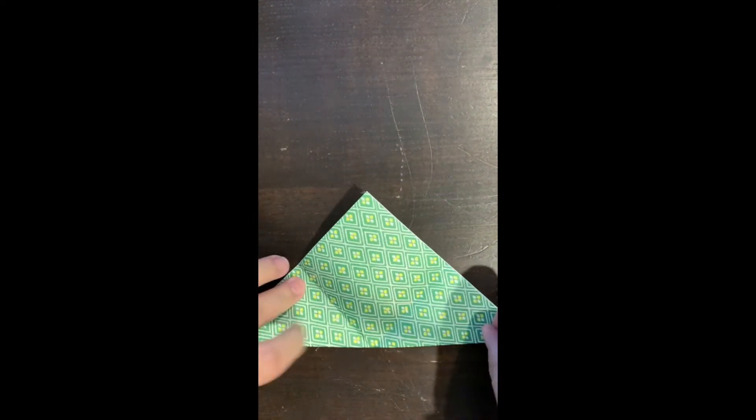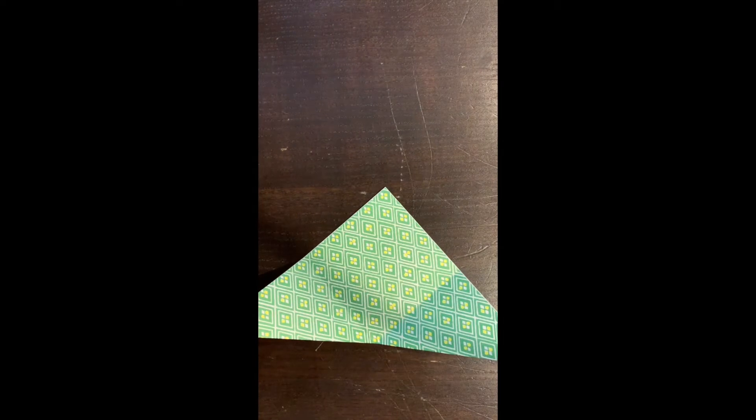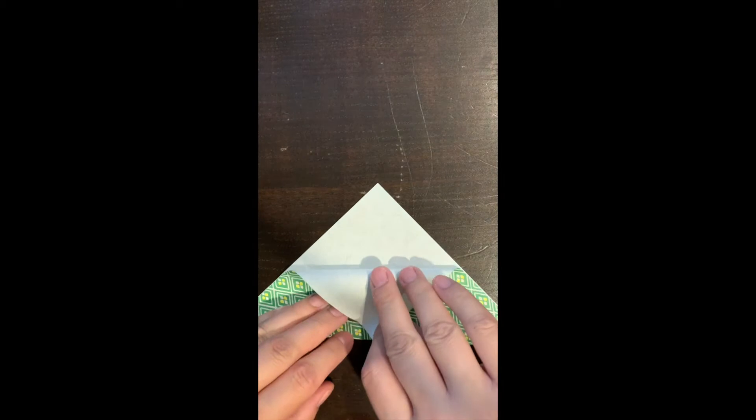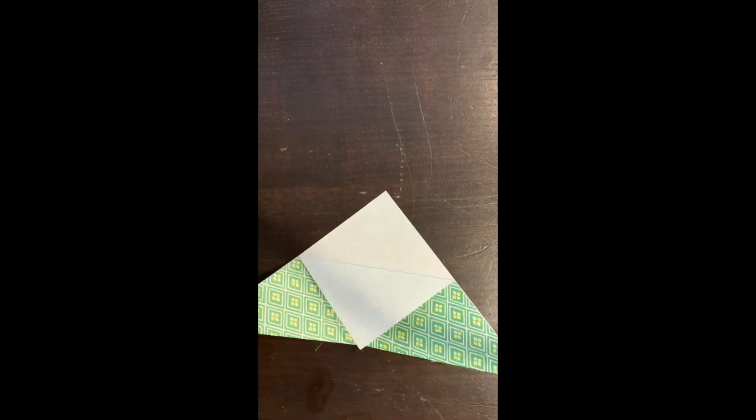Now we are going to unfold those little wings we just made. The next step is to take one piece of your top corner and fold it down to create that triangle there.